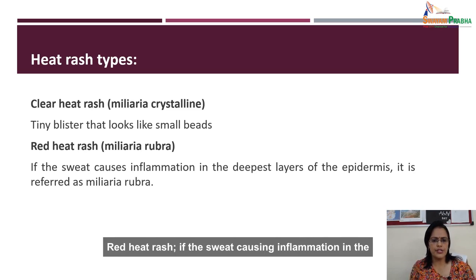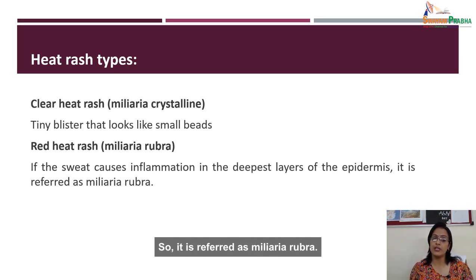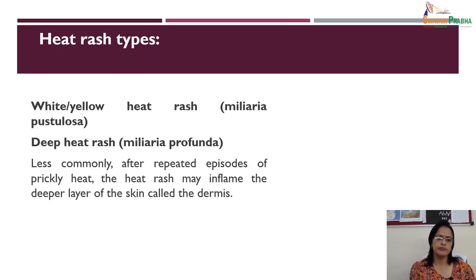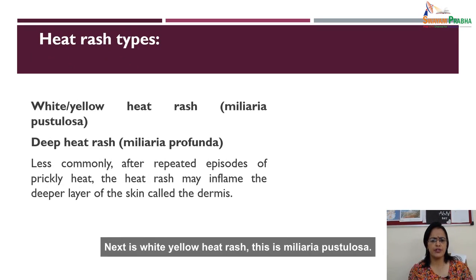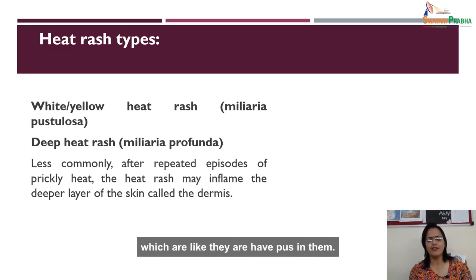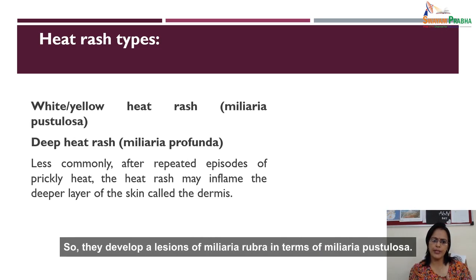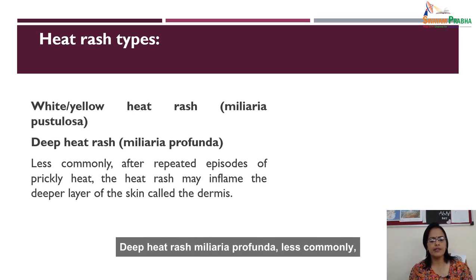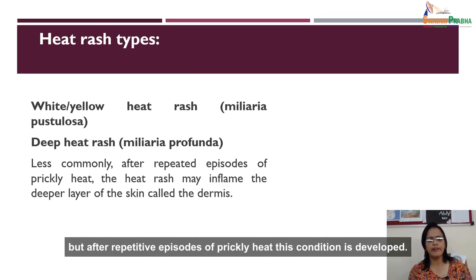Next is white-yellow heat rash, miliaria pustulosa, which involves pustules — pimples that contain pus. These develop from lesions of miliaria rubra. Deep heat rash, miliaria profunda, is less common but develops after repetitive episodes of prickly heat.